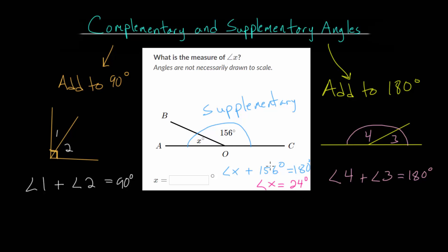And you can check this just by re-adding these together. Is it true that 24 and 156 add up to 180? And that is true. If you add 4, you get to 160, adding 20 brings you to 180. So we can put 24 degrees into our box.